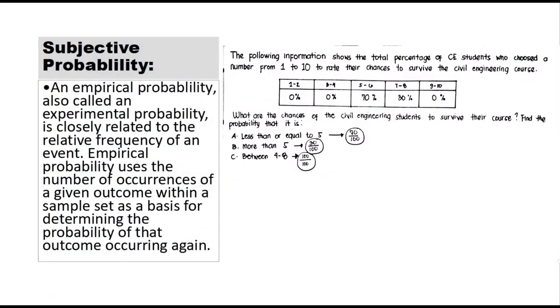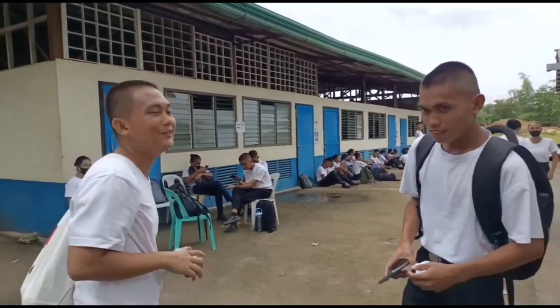A subjective probability is anyone's opinion of what the probability is for an event. Although this may not seem very scientific, it is often the best you can do when you have no past experience and no theory. One way to improve the quality of a subjective probability is to use the opinion of an expert in that field. Today we will conduct a survey asking students to rate their chances of surviving a civil engineering course on a scale of 1 to 10.